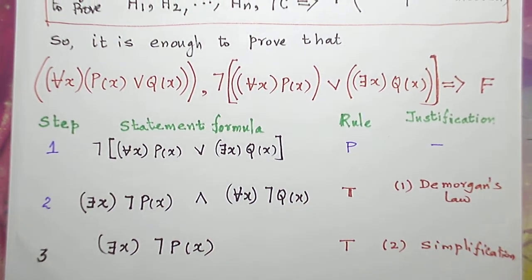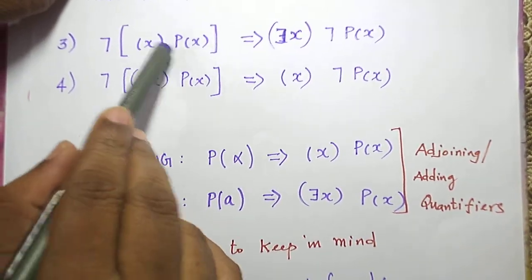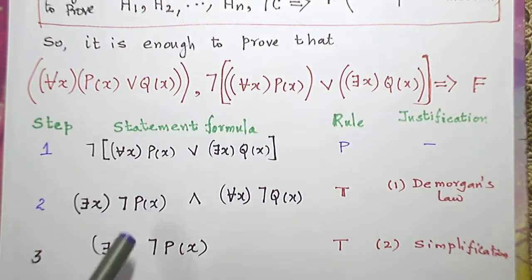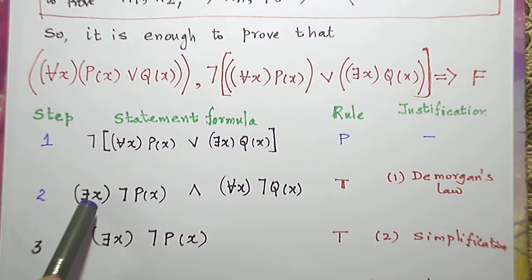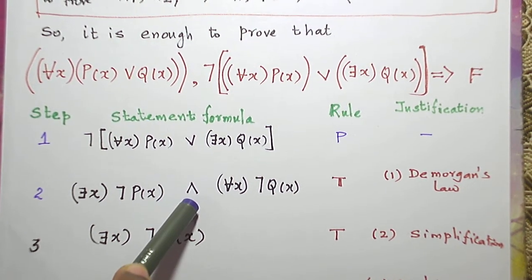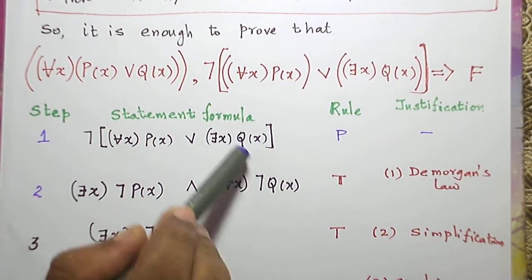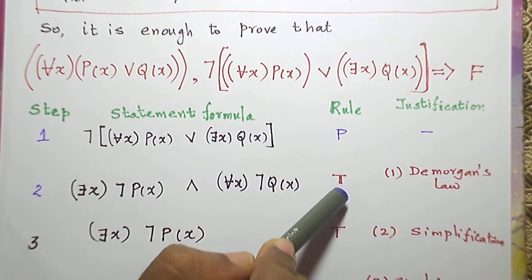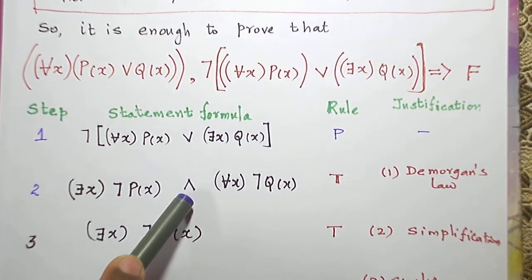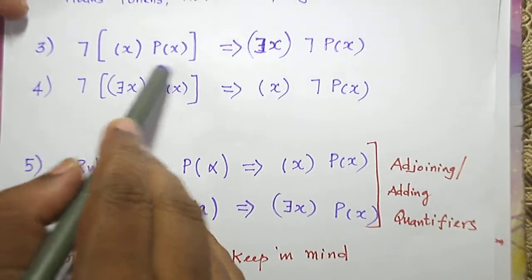Before removing the quantifier we have to bring this negation inside the bracket. As I told you in a previous predicate calculus video, when we bring the negation inside the quantifier, it changes: for all x becomes there exists x, and there exists x becomes for all x. Additionally, the or connective will become and. So we get: there exists x negation p(x) and for all x negation q(x), using rule T when we apply De Morgan's law in step one.